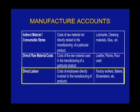Moving on to direct labor — this is the cost of the employees directly involved in the manufacturing of products. Examples include the factory workers who made the product, the machinist who operates the machine to make the garment, and the shoemaker who puts the leather together using glue. Direct labor means the person directly involved in making the product. Now, would the cost of the person cleaning the factory be part of direct labor?